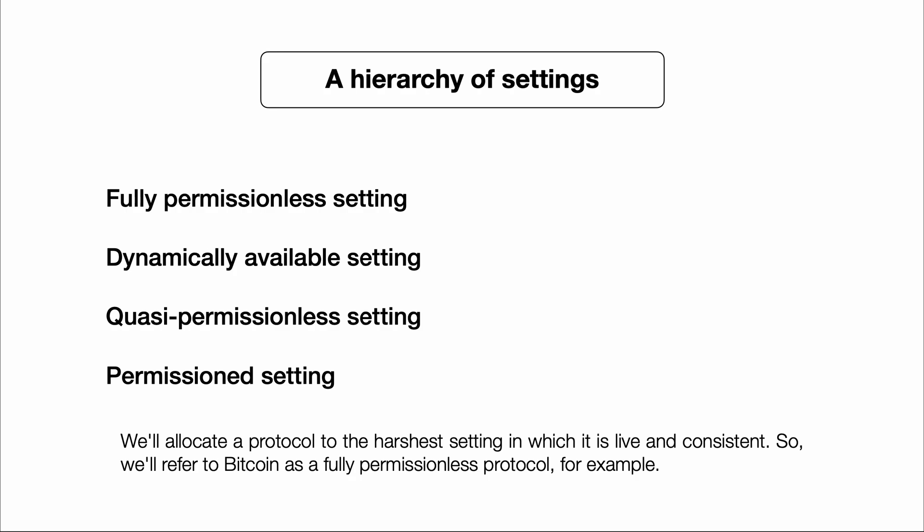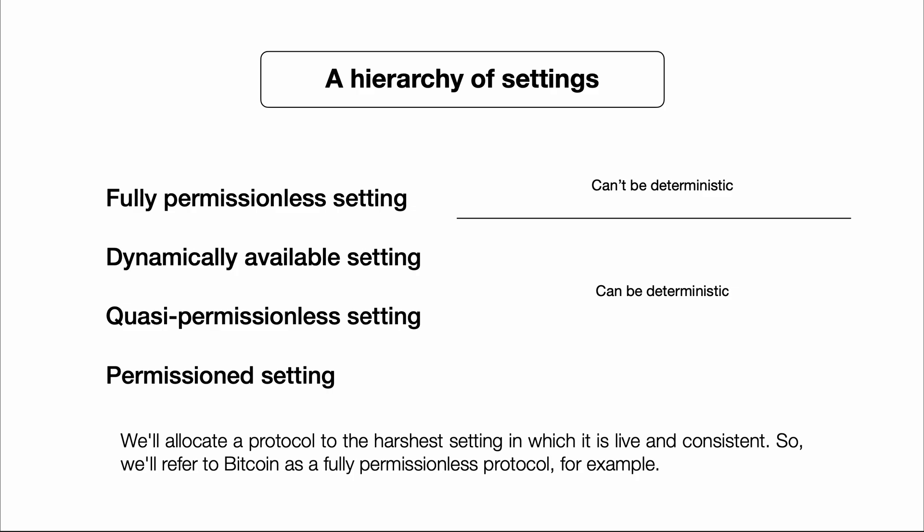This is a strict hierarchy — each level being easier than those above it. If we prove an impossibility result at a certain level of the hierarchy, that result automatically holds for all levels above. For example, an impossibility result for the dynamically available setting automatically holds for the fully permissionless setting. We allocate a protocol to the harshest setting in which it operates effectively: Bitcoin is a fully permissionless protocol, Algorand is a quasi-permissionless protocol. Often what's possible is not so much a function of whether the protocol is proof of work or proof of stake — it's really a function of the setting in which you operate.